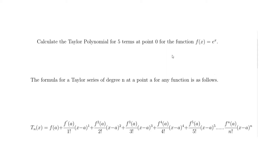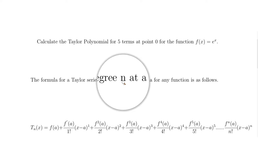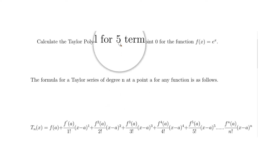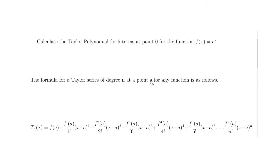In this video we're going to calculate the Taylor polynomial for five terms at the point zero for the function e to the x. When calculating the Taylor polynomial it's always good to know what degree you need. The degree is the variable n, and in this video n is 5 because we're looking for five terms. The point a, where we're calculating, is zero. So where we see n we substitute 5, and where we see a we substitute zero.